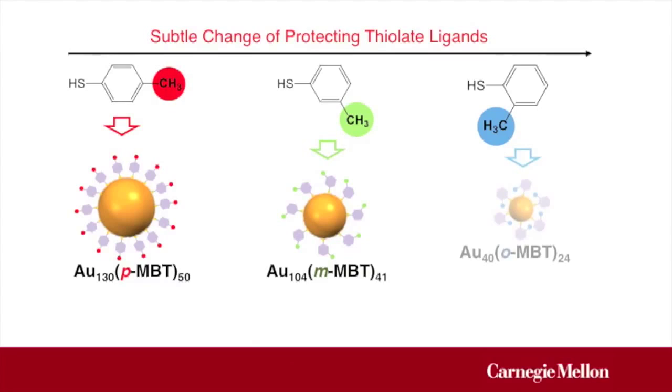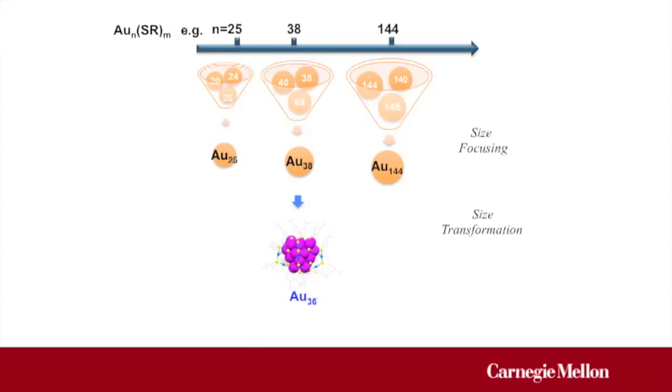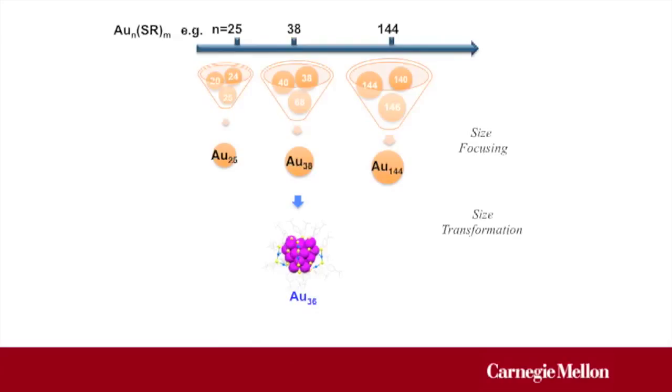The discovery of thiol ligand effects is the key to expanding the size library of gold nanoclusters, and it is probably safe to say that the ligand selects the magic sizes. The LEIST reaction is a useful tool for tuning the size and structure of nanoclusters. We have further transformed Au25 nanoclusters into Au28 and Au144 nanoclusters into Au133.